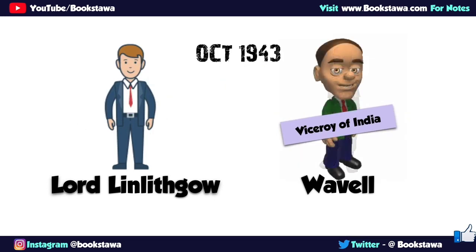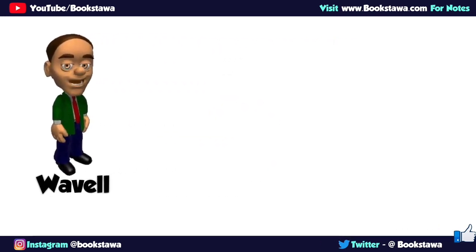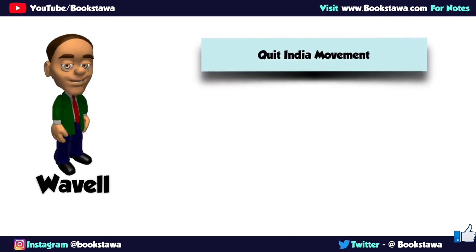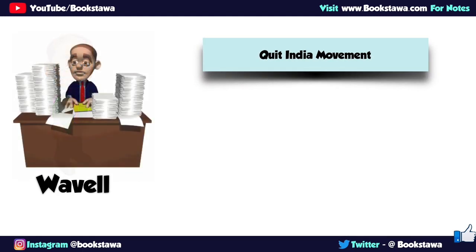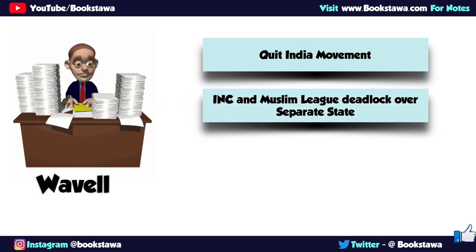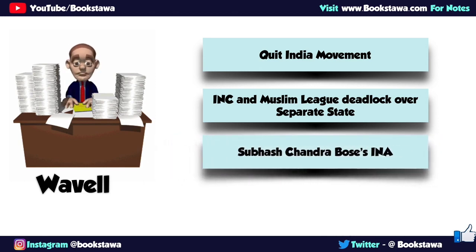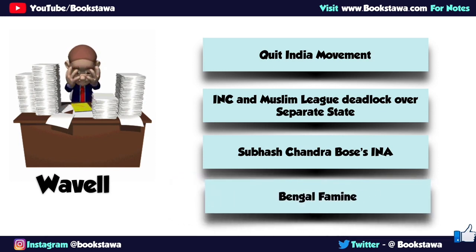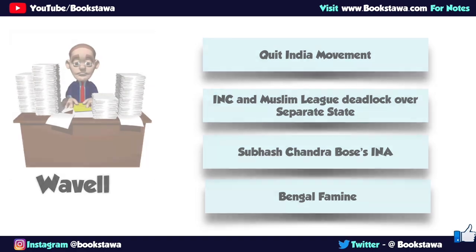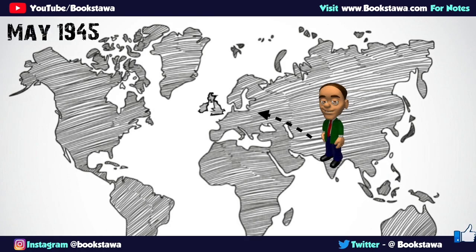When Lord Wavell became the Viceroy of India, there were four major situations in India to tackle. The first was the Quit India movement going on under the leadership of Gandhiji. Apart from this, Jinnah was adamant about the demand of creating a separate state for Muslims, i.e. Pakistan, and a political deadlock had been created in India. Subhash Chandra Bose had formed the Indian National Army and was preparing to attack India's eastern border with Japan. The fourth situation was that famine, i.e. starvation, had spread in Bengal. Lord Wavell was engaged in controlling the Bengal Famine on one side, and on the other hand, he was looking for a solution to end the deadlock between Congress and the Muslim League.